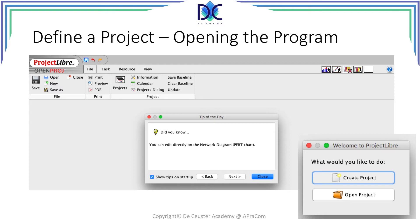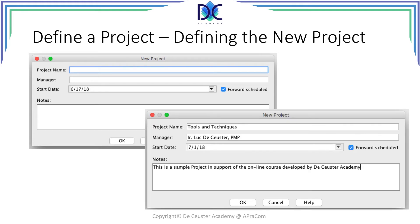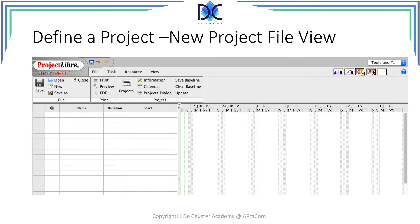Let us assume that you don't have any projects defined in Project Libre, so we click Create Project. The New Project window opens, and you can enter the project name, the manager, the start date, and some notes to explain what the project is about. I put 'Tools and Techniques' as the project name, I am the project manager, and I indicated that it is a sample project in support of this online course.